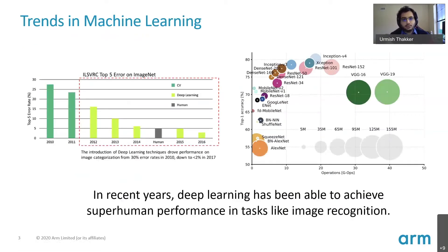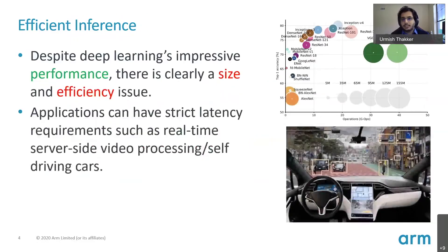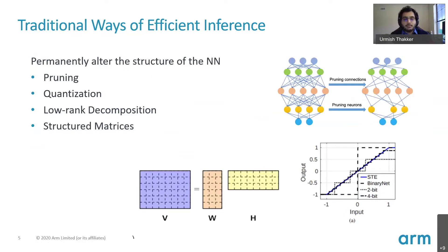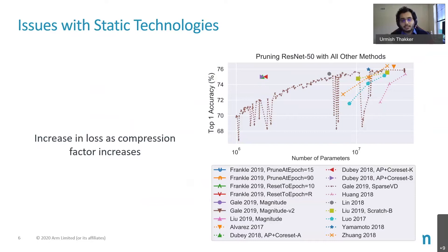Deep learning has led to superhuman performance in tasks like object recognition, but that has come at a significant cost in terms of model size and latency. Many applications run on devices which are much smaller or under much shorter latency constraints. The way we've generally solved these problems is to use techniques like pruning, quantization, and low-rank decomposition. I'll call all of these static compression techniques, because they permanently alter the structure of a neural network. Things once pruned or quantized cannot be recovered back.